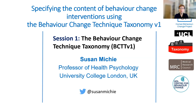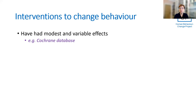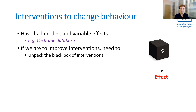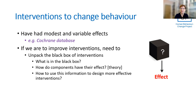In this talk, I will present the Behaviour Change Technique Taxonomy, also referred to as BCTT-V1. Interventions to change behaviour have had modest and variable effects, as any systematic review of behavioural interventions will show you. And if we're to improve interventions, we need to unpack the black box of interventions — what is it that's bringing about the effect? What is in the black box, and how do components have their effect? This is where theory comes in, and how can we use this to design more effective interventions?